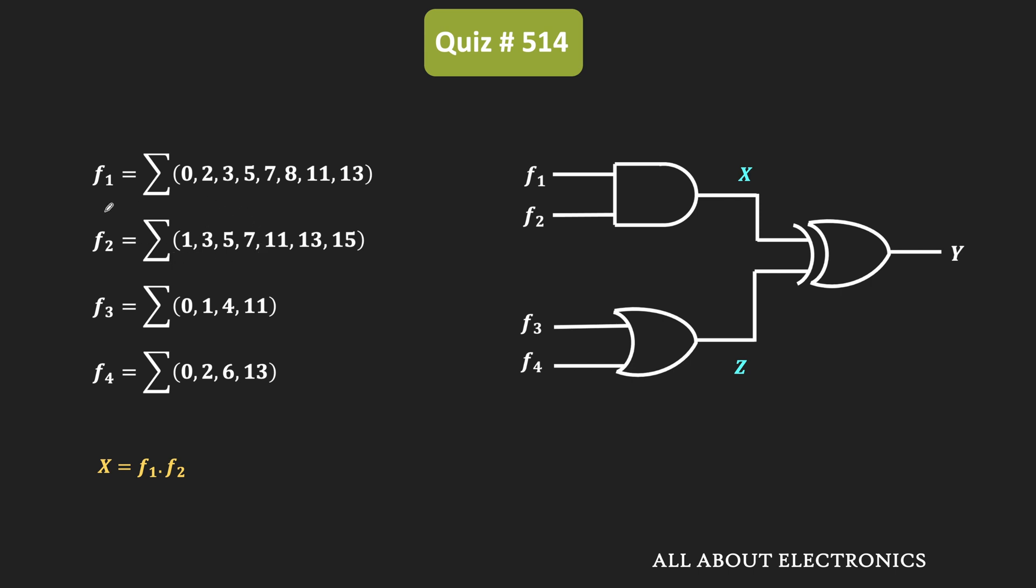So as you can see, in this function F1 and F2, these common minterms are 3, 5, and 7, as well as 11 and 13. That means here, this output x contains the following minterms.